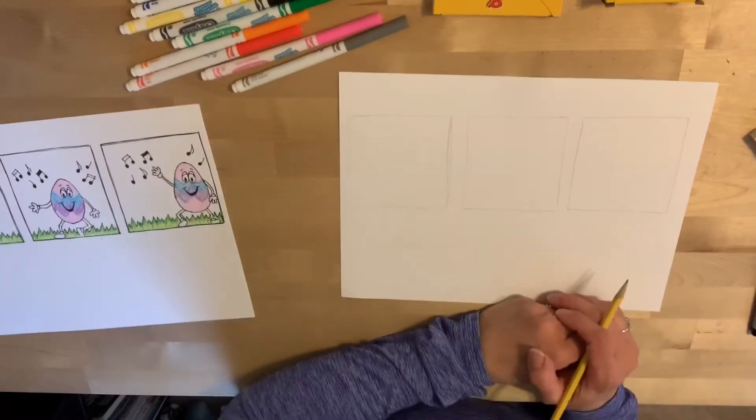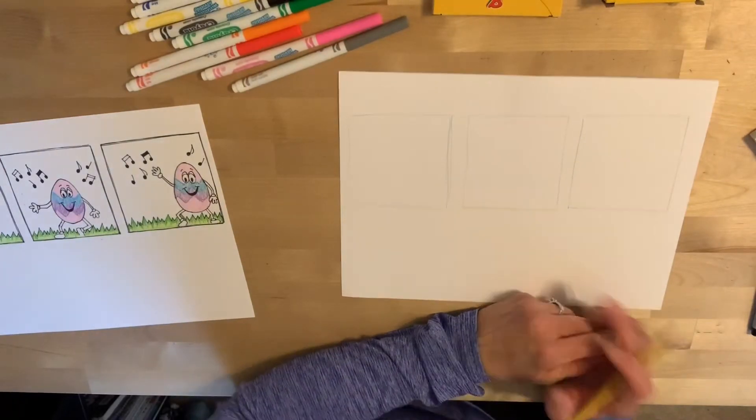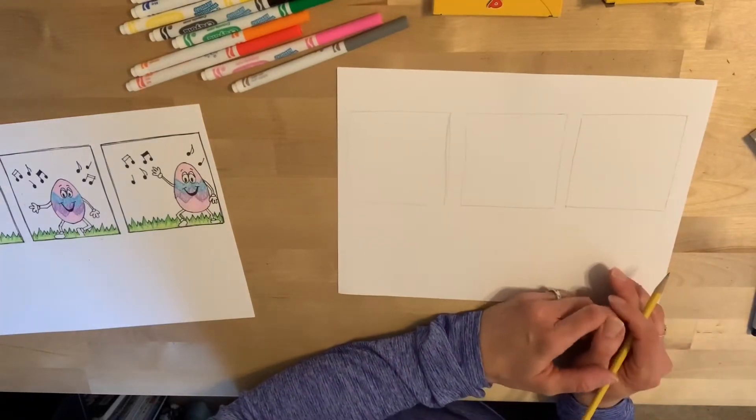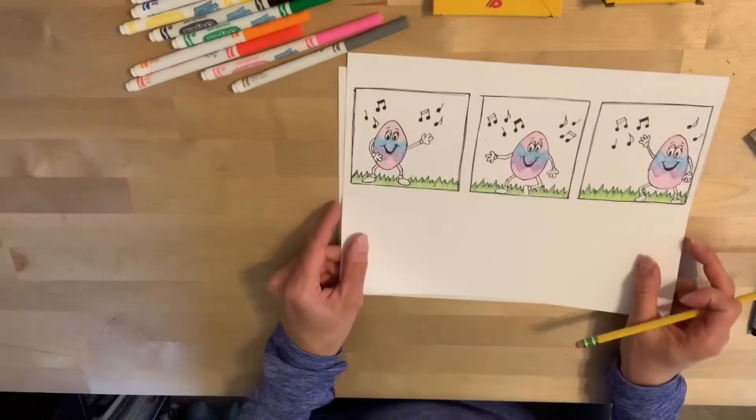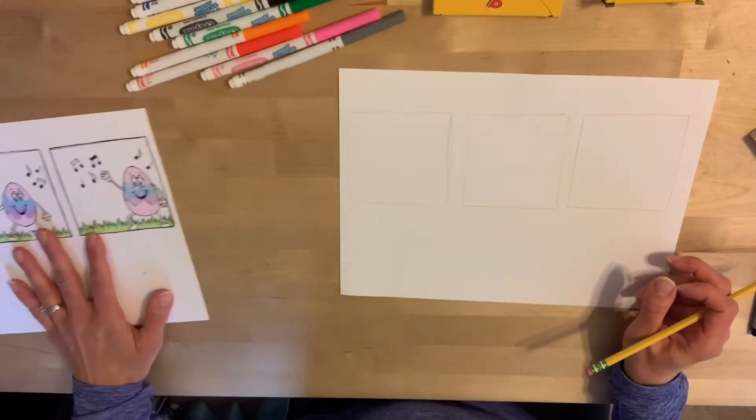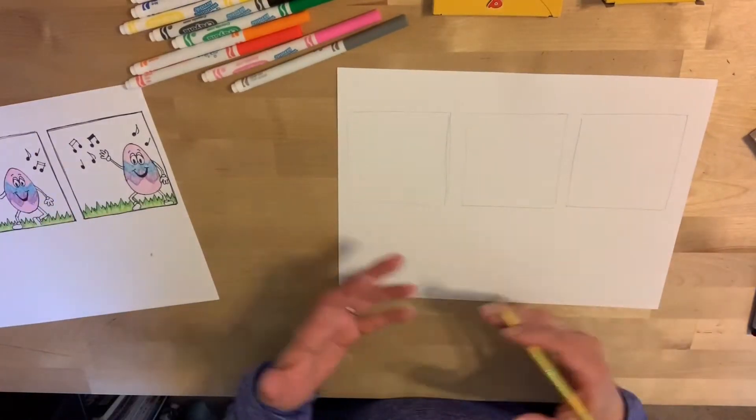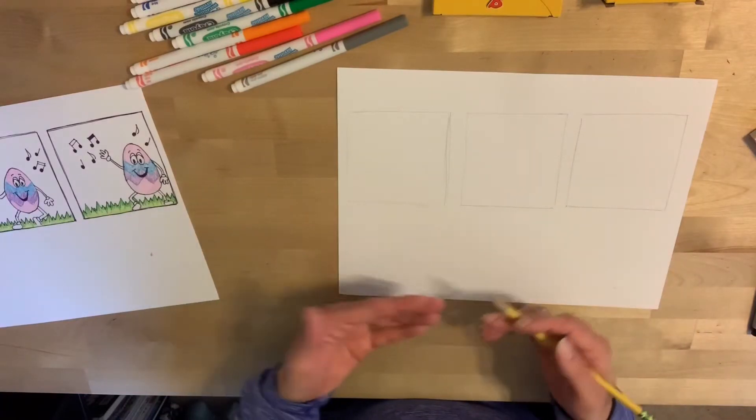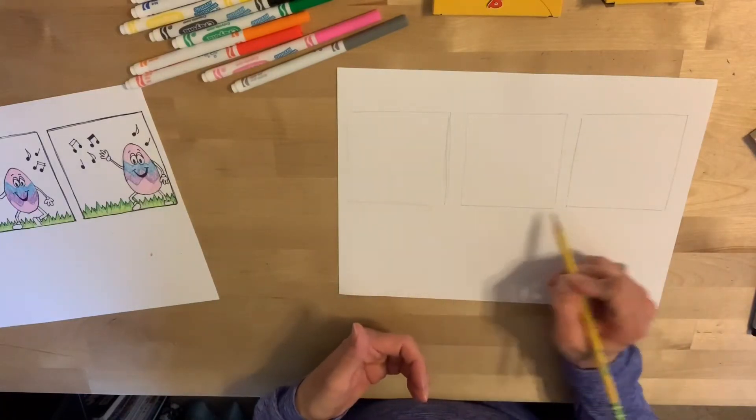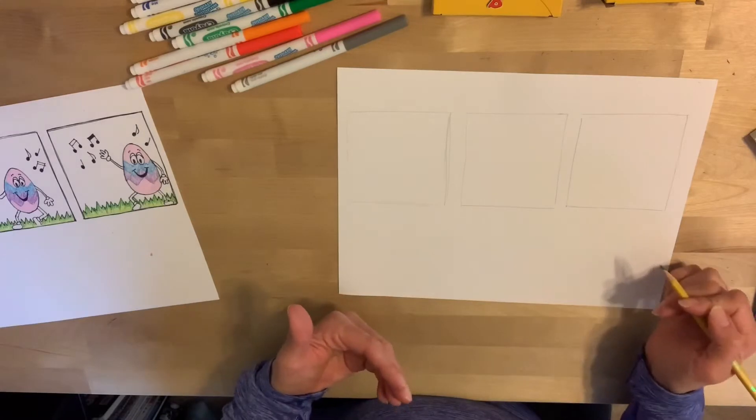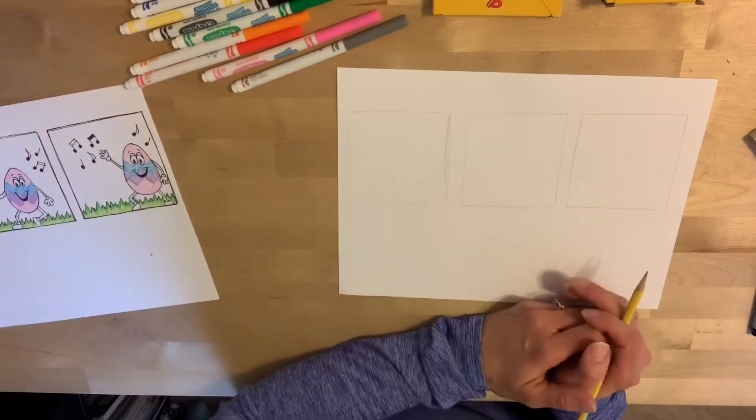Then I need to decide what I'm going to make my comic strip about. I would recommend choosing something pretty simple. I did a dancing Easter egg. Maybe you want to do a basketball that's jumping into a net or a flower walking across each square, a car moving, a butterfly flying. Think of something pretty simple.